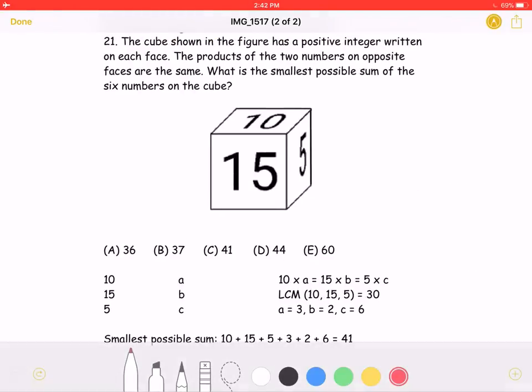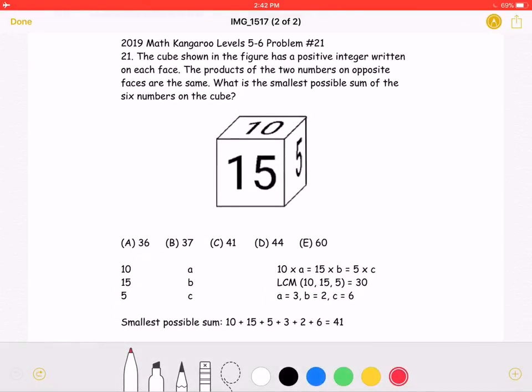Here's the version with the solution. Let's start by assigning letters to the faces that we cannot see in the picture. Let's write the face opposite the 10 as A, the face opposite 15 as B, and the face opposite the 5 as C.